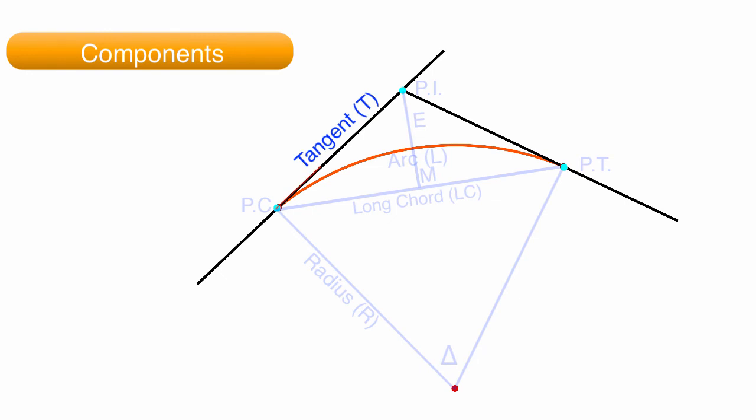The tangent distance is the straight line distance from the PC to the PI. The tangent is the extension of the road. The tangent distance is also the same distance from the PI to the PT.